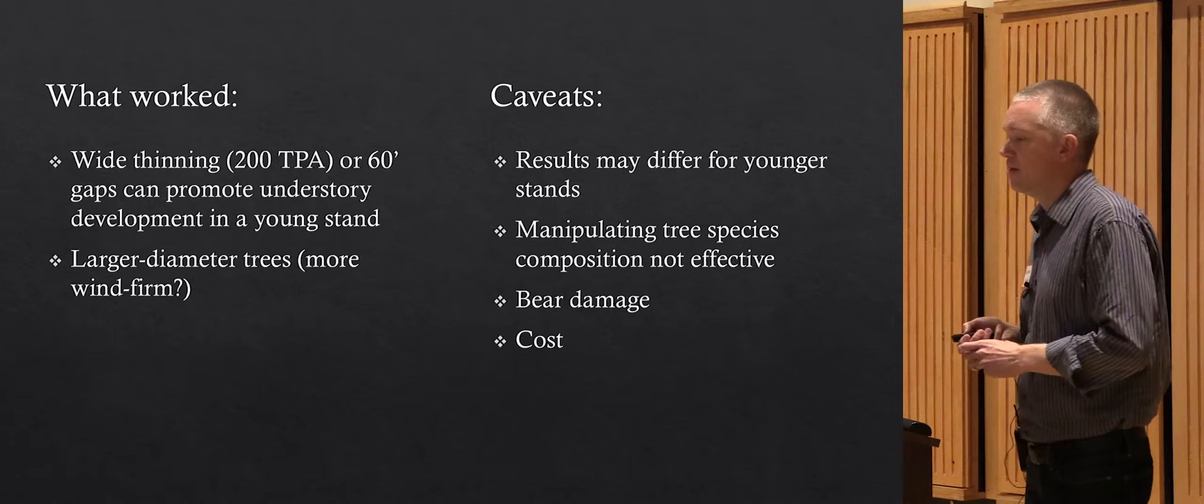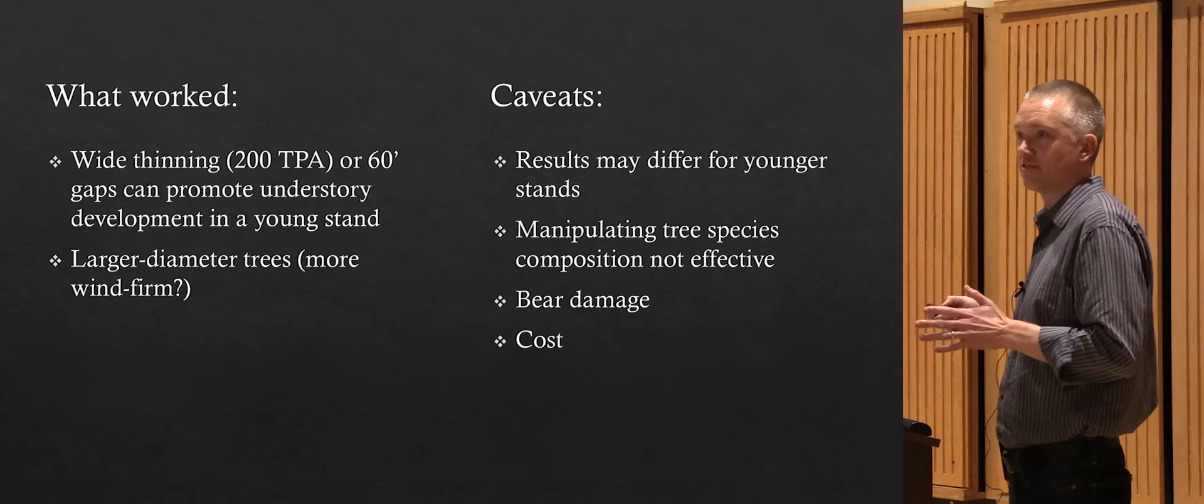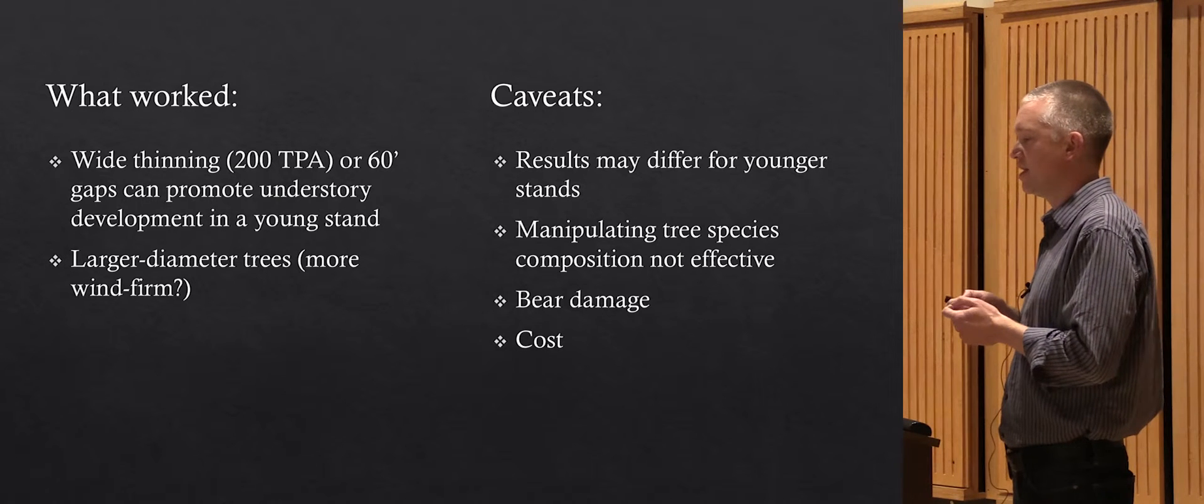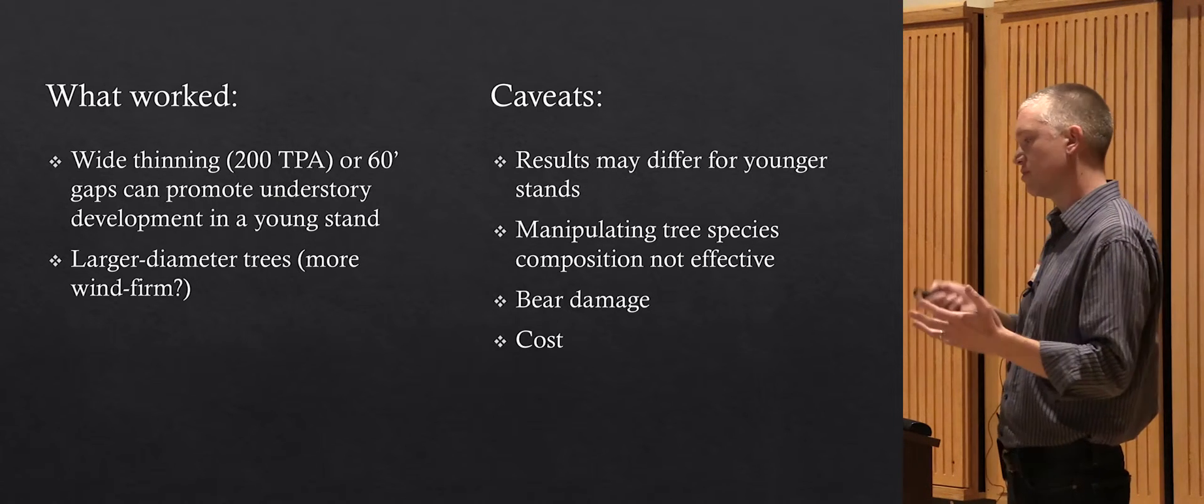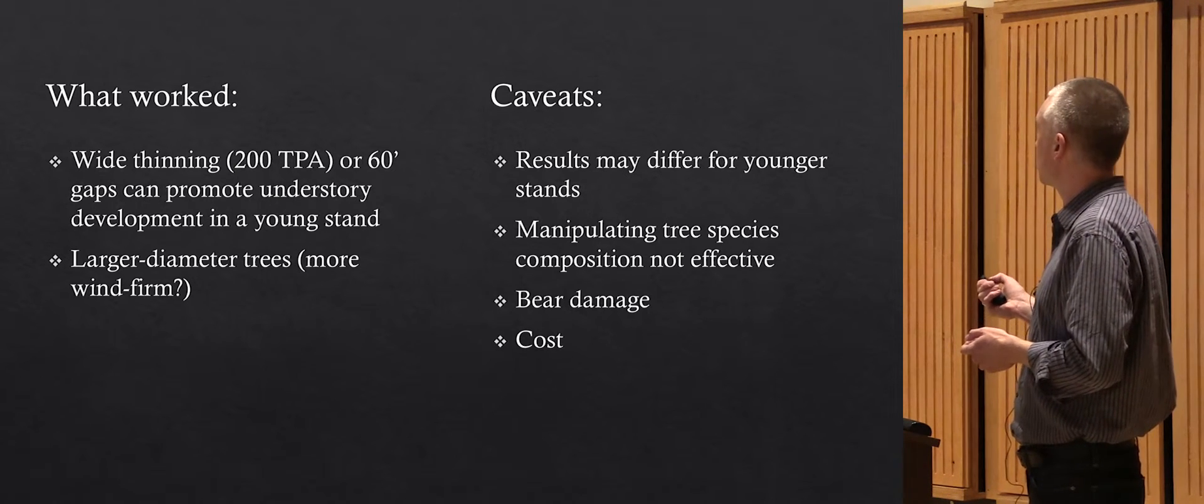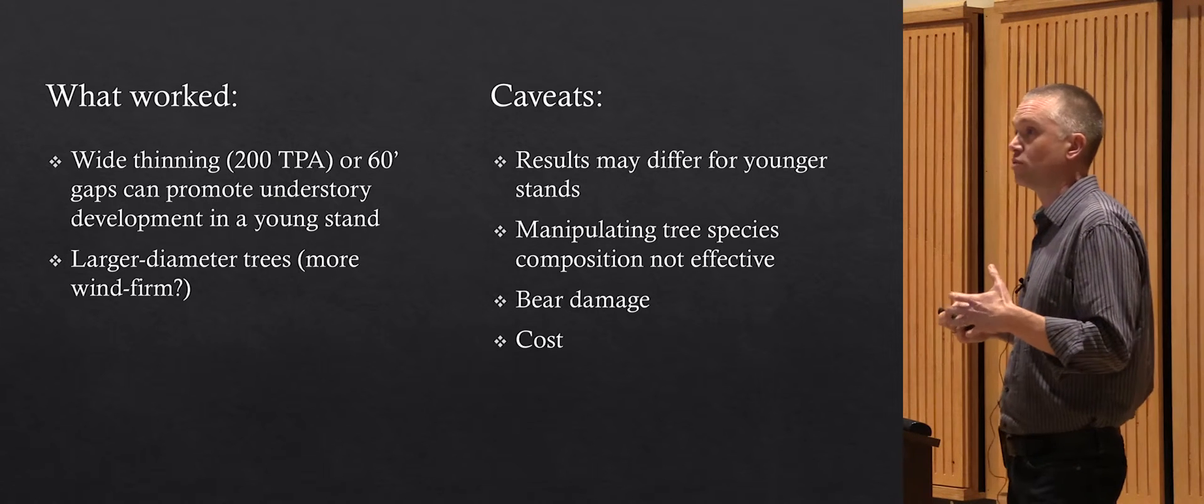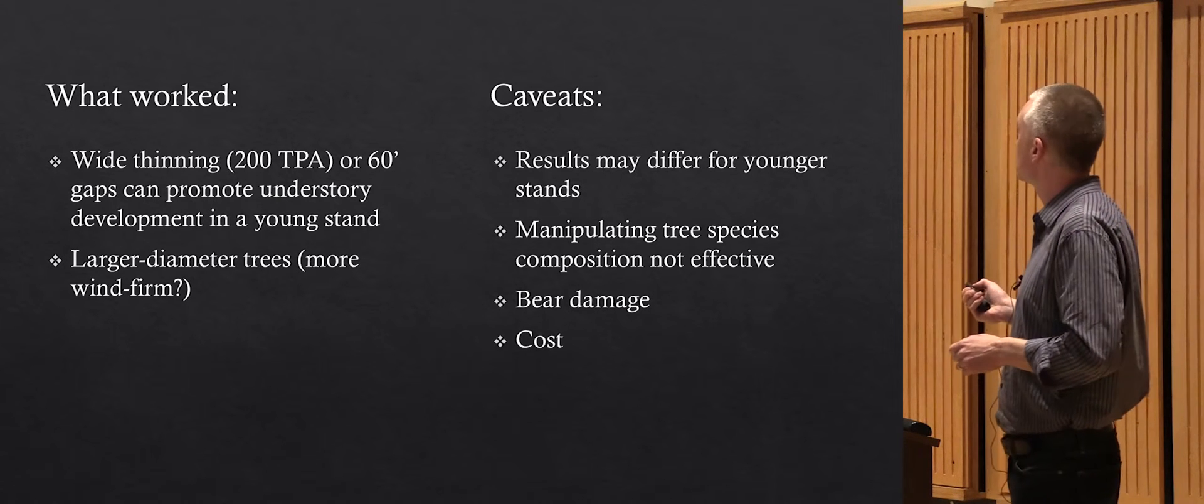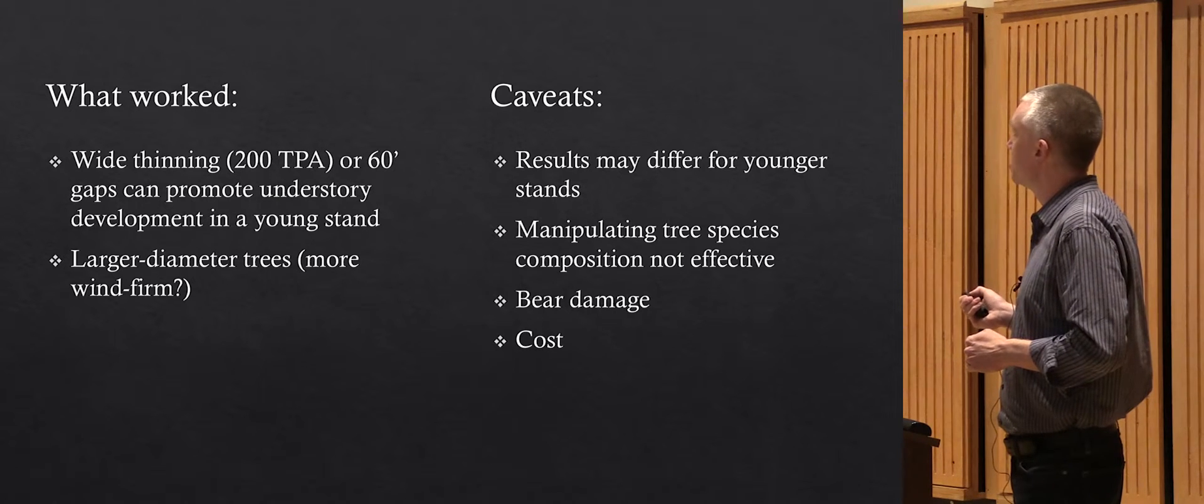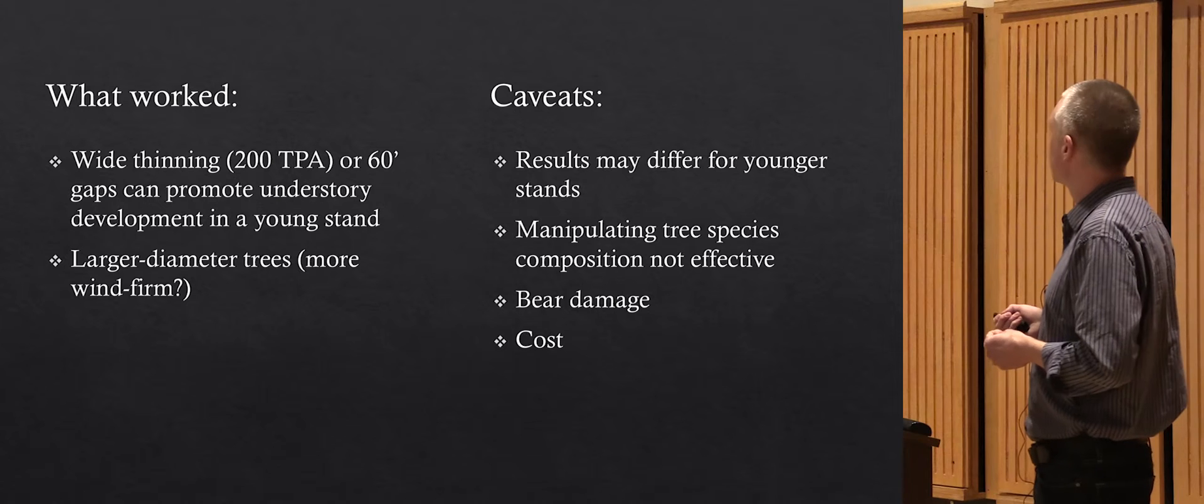Talking about what worked in this project. Basically, if you have this competitive exclusion phase in these young stands where trees are trying to take all the light, and if you want to diversify the habitat, diversify the forest structure during that early development stage, wide thinning looked like it could achieve that goal. You got some understory even after 16 years. The 60 foot gaps were large enough that you still had some understory going on. We found you could definitely achieve some larger diameter and potentially more wind firm trees with these pre-commercial treatments.